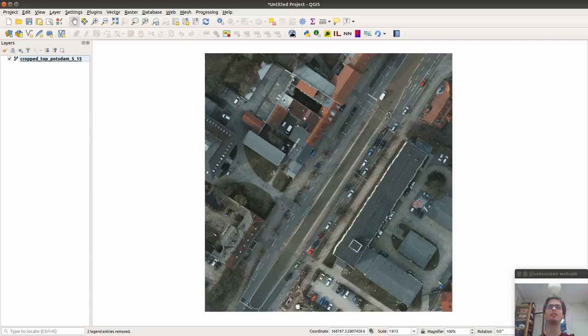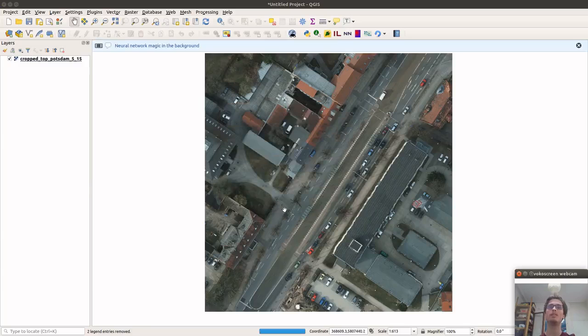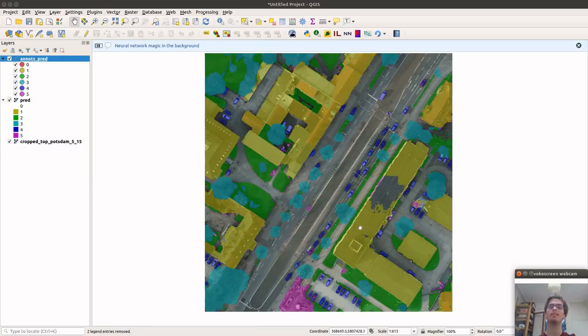I will begin this presentation with a short demo of the tool that we developed for this work. So here is an image from the dataset ISPRS Potsdam, and the goal is to do a semantic segmentation of the scene, or in other words, a pixel-wise classification of this image. To do so, we do an initial prediction with a neural network trained on the dataset, and this image has not been seen during training.